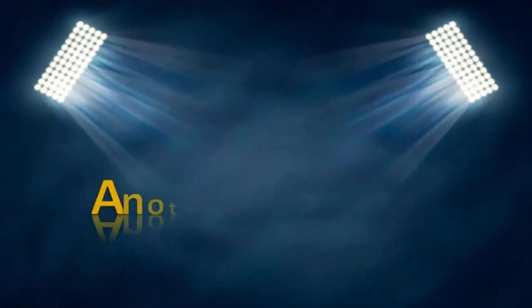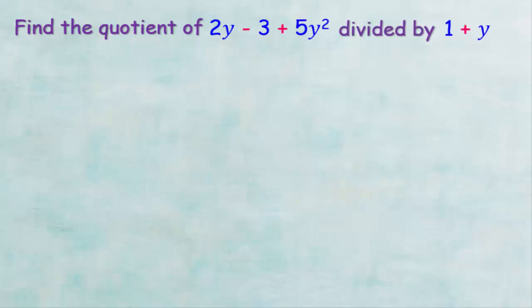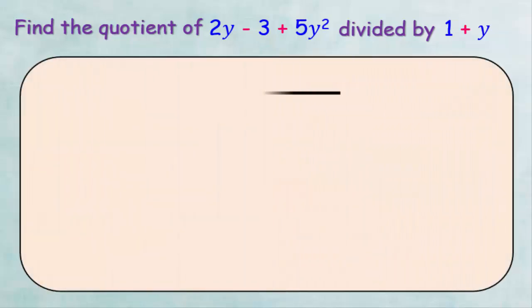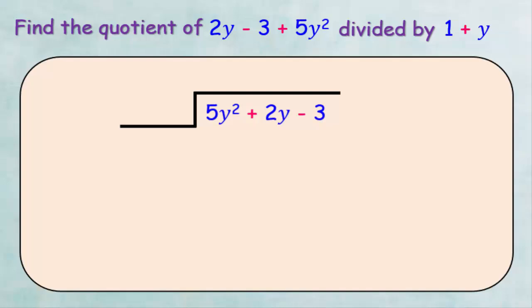Let's take another example. We want to find the quotient of 2y minus 3 plus 5y squared divided by 1 plus y. First we have to arrange the terms in descending order according to the power of y. After arranging, the dividend becomes 5y squared plus 2y minus 3 and the divisor becomes y plus 1.